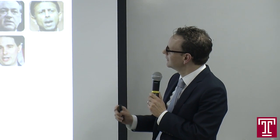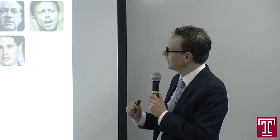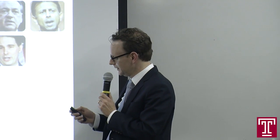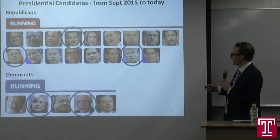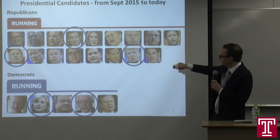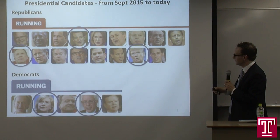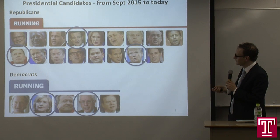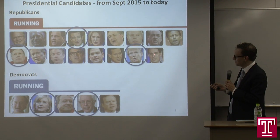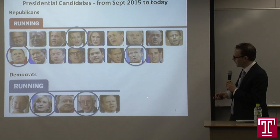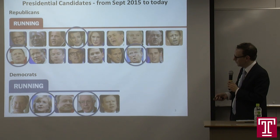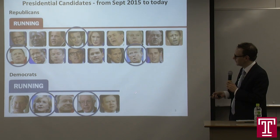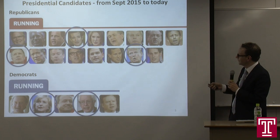Back in September 2015, we had 17 Republicans running, competing to be the one Republican candidate. We now have three left: Ted Cruz, John Kasich, and Donald Trump. On the Democratic side, there were five main candidates, and we now have Hillary Clinton and Bernie Sanders left. So this field has been winnowed from more than 20 to five at the moment.